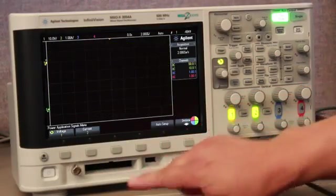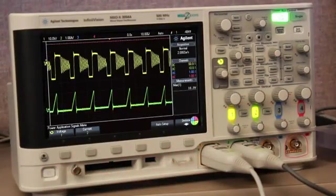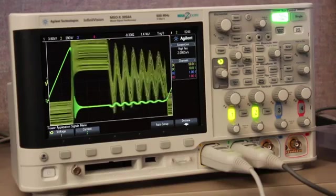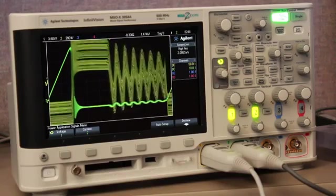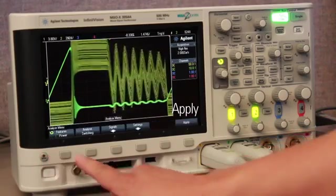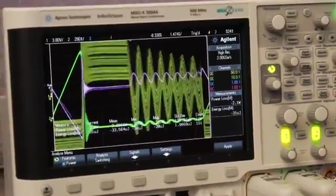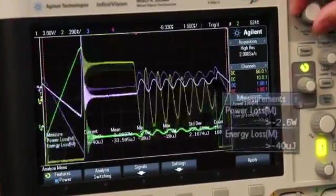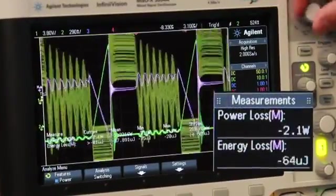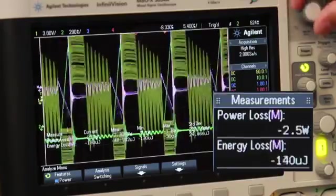Now press the Auto Setup soft key to automatically fit one cycle of the voltage and current signal on the screen, and then select Apply to run the Power Loss Measurement. This will automatically measure the instantaneous power loss in a steady state of operation in wattage and the energy loss in joules.